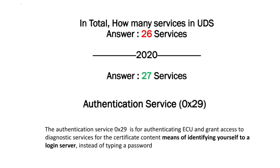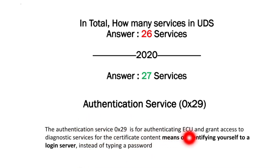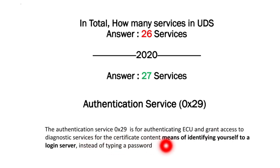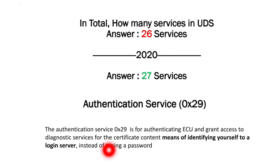That new service is called the Authentication Service, with Service ID 0x29. The definition of Authentication Service 0x29 is for authenticating an ECU and granting access to diagnostic services via certificate content, as a means of identifying yourself to a login server instead of using a password.